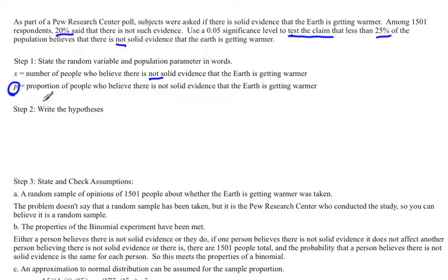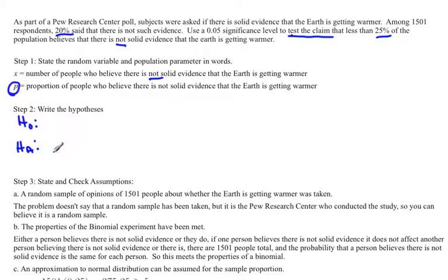So now we can actually write out the hypotheses. Remember there are two hypotheses in every hypothesis test. The first one is H0, which is the null hypothesis, and then there's the alternate hypothesis, HA.